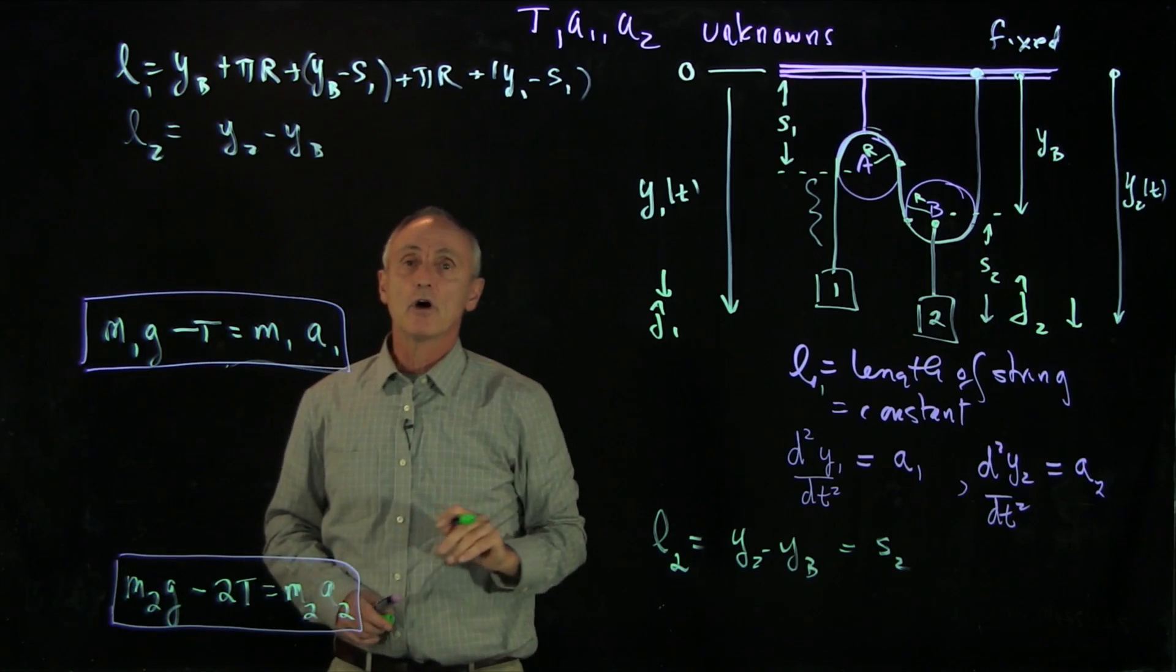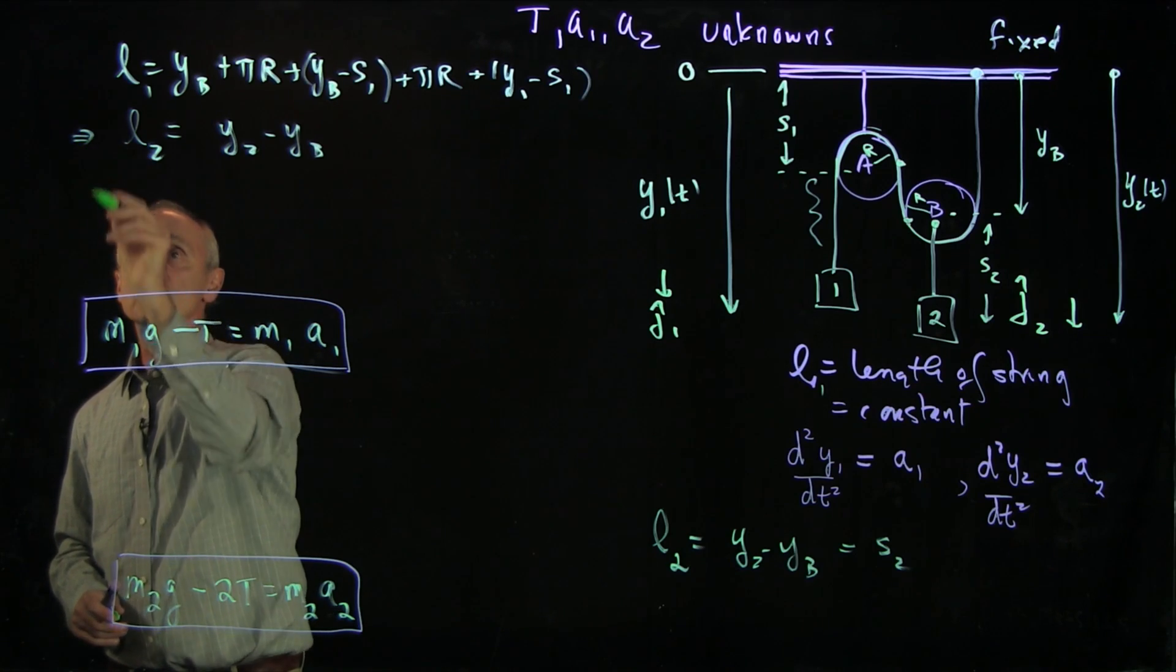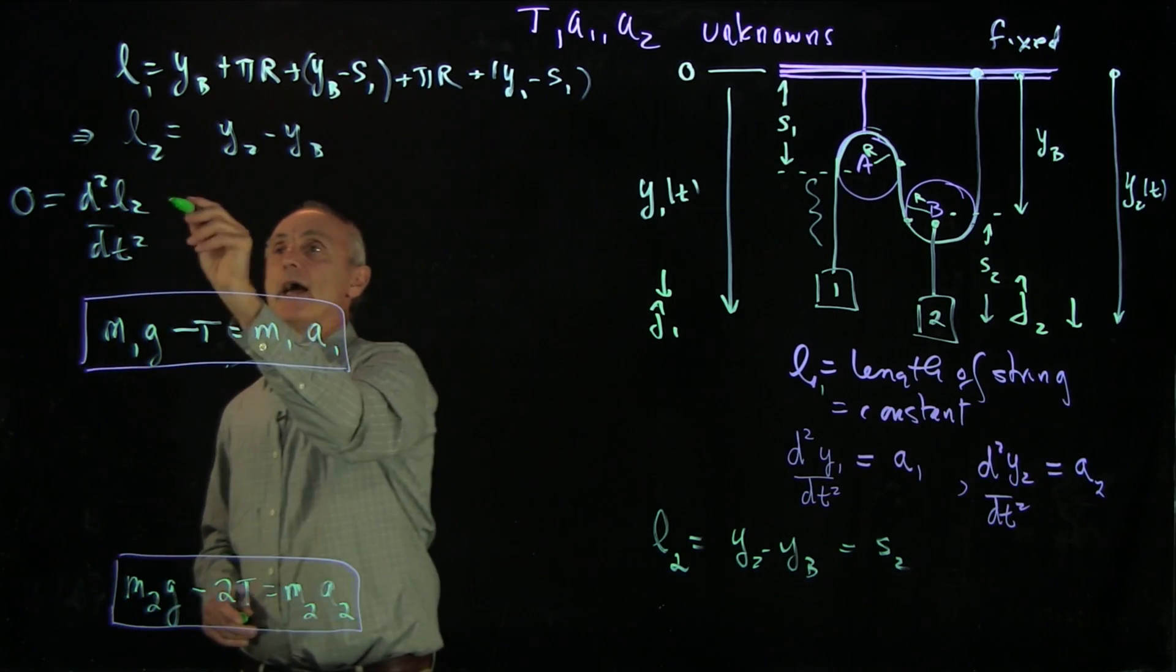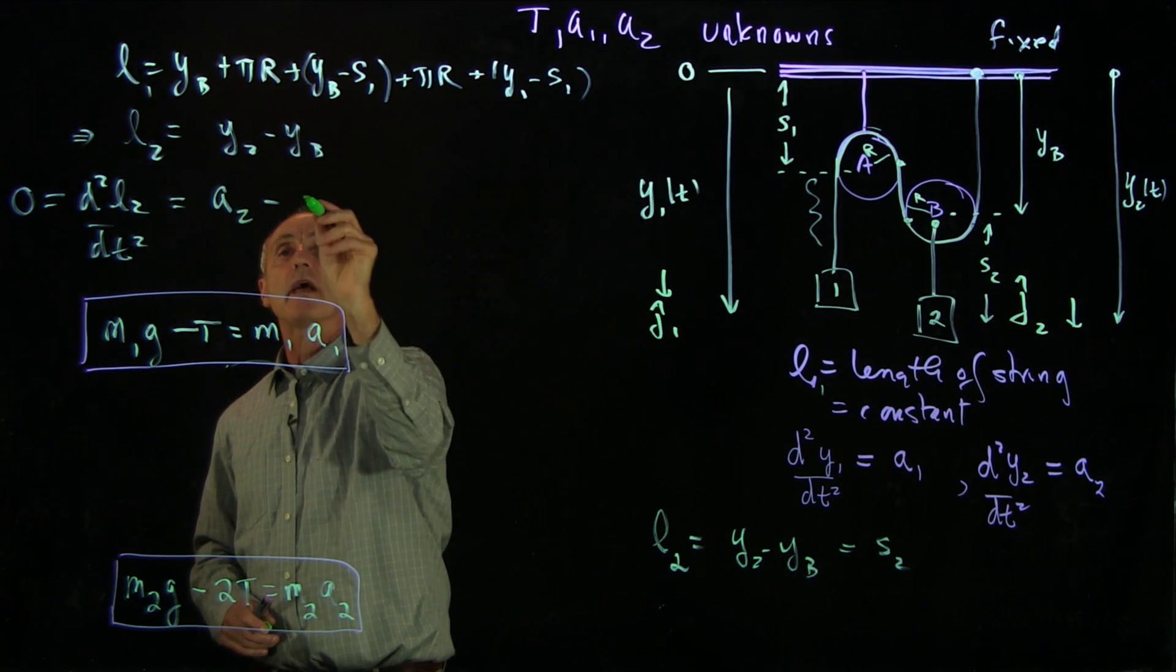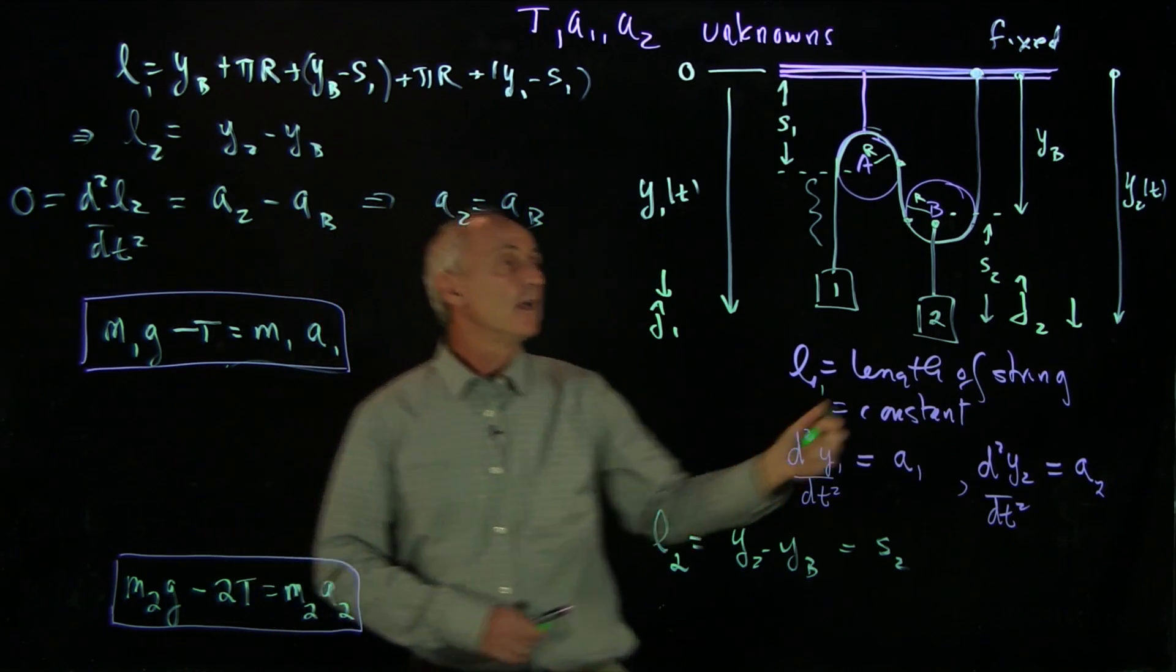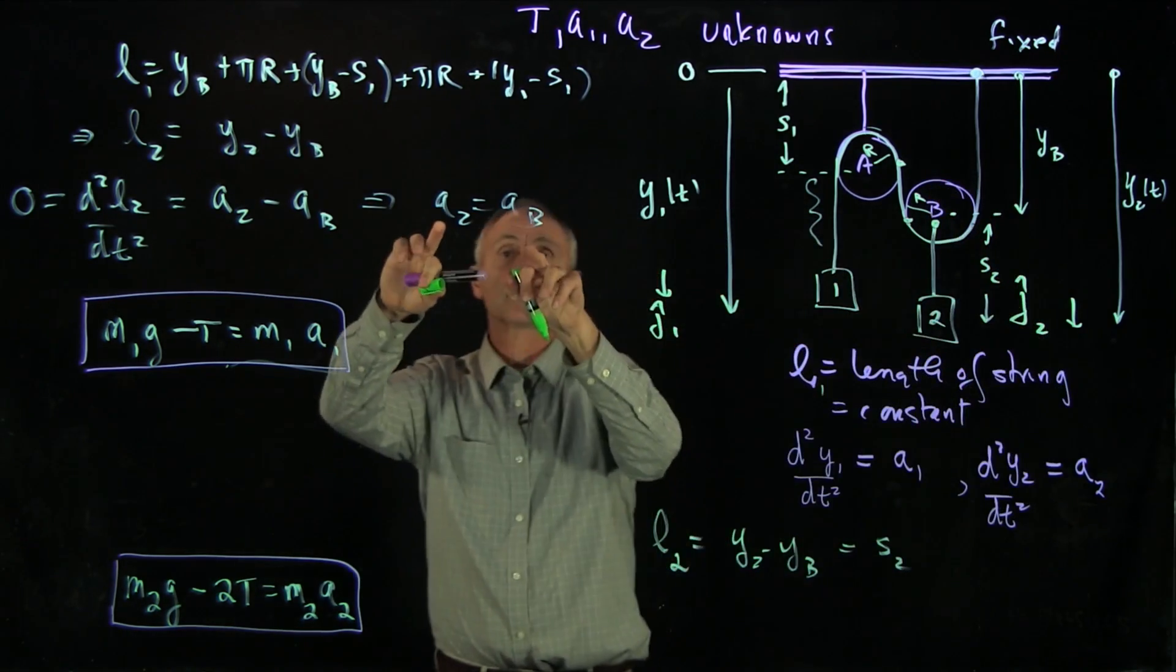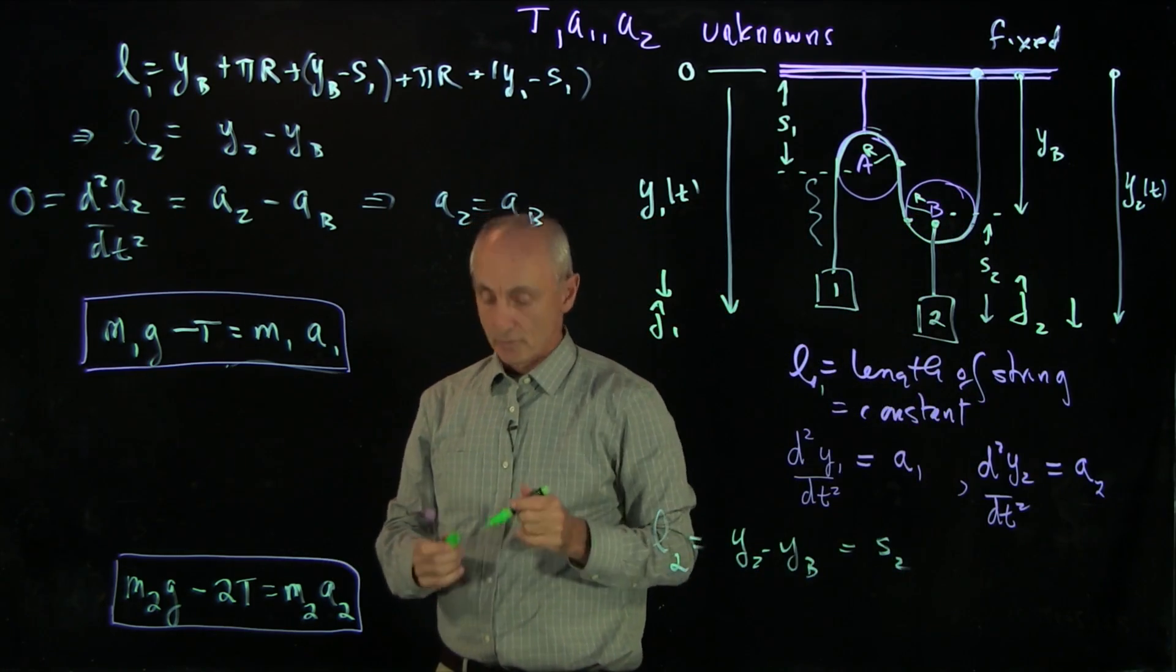Let's start with this one first, that the second derivative of l2/dt², because the length of the string is a constant, that's 0. And that tells us two derivatives of this is a2, and two derivatives of that is ab. And this is something that we saw before, that block b and 2 are moving together. So when we treated the system as just b and 2 together, we see that the acceleration of 2 and the acceleration of pulley b are the same. We could have just said that before we began.